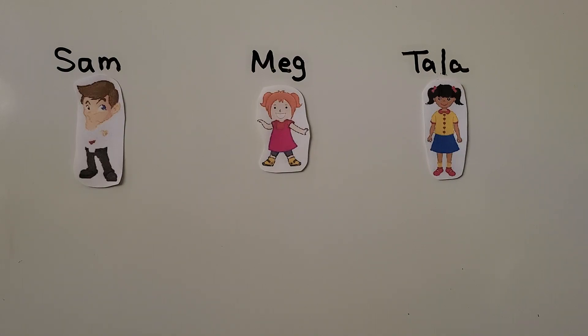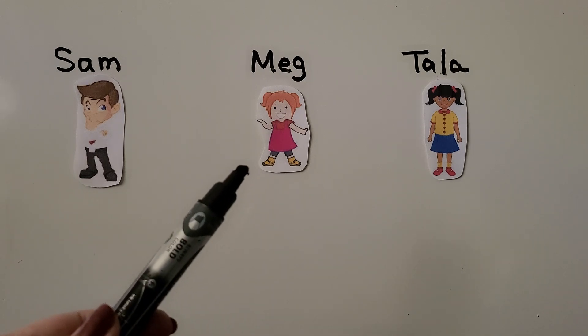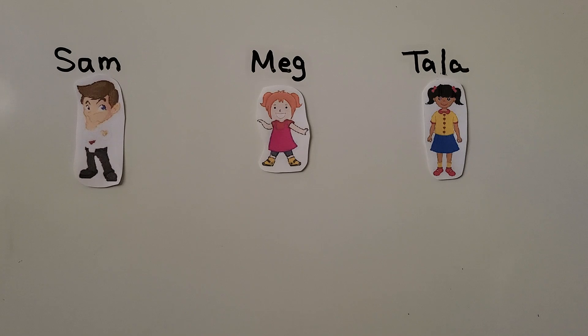Here we have a problem, and we have some people. We have Sam, Meg, and Tala. Sam found 5 acorns. Meg found 3 acorns. Tala found 1 less than Sam. How many acorns did Tala find?